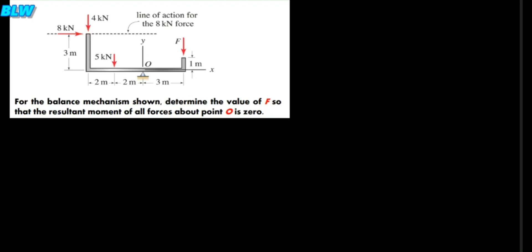The question on the screen is: for the balance mechanism shown, determine the value of F so that the resultant moment of all forces about point O is zero. What we are going to do is find the moment of each of the forces, add all of them, equate to zero, then solve for F. Our first force is 8 kN.